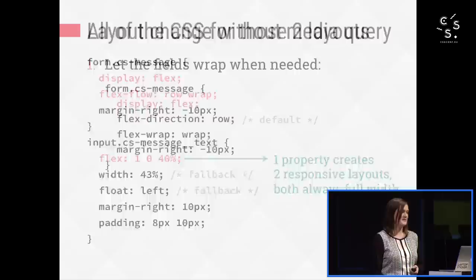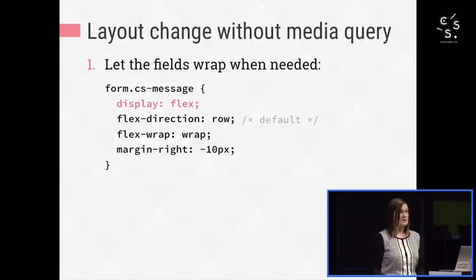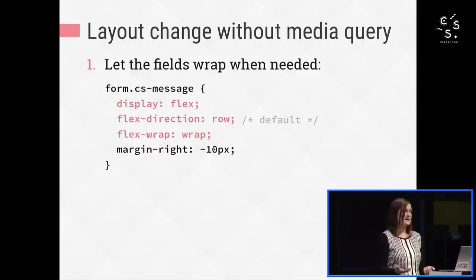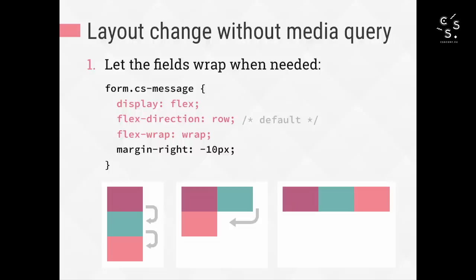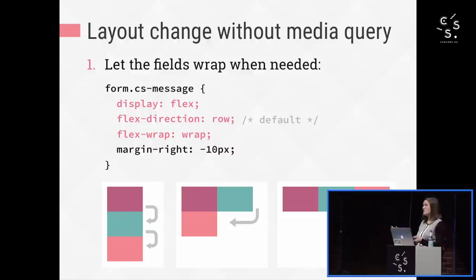Let me walk you through how this CSS works. First, we turn on Flexbox using display flex on the container. That turns the form into a flex container and the child fields into flex items. By default, this puts the items horizontally on a single row. But flex-wrap: wrap allows them to wrap onto multiple rows as needed. So if I didn't have flex-wrap set, the fields would always stay on one row no matter what, even if content has to be cut off or they overflow. But with flex-wrap, they will be stacked on narrow screens and then automatically switch to side by side when there's room. It's similar to changing flex-direction from column to row in a media query, but without needing any media query.